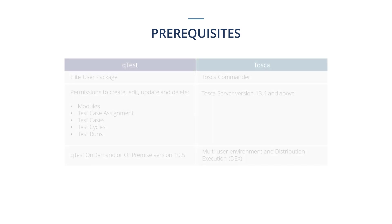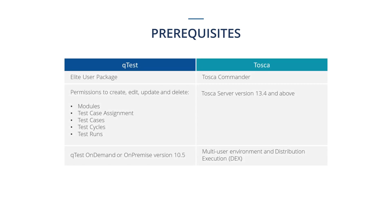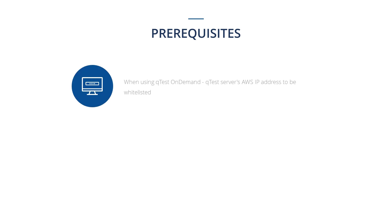To complete this integration, make sure you meet the prerequisites mentioned on screen. Apart from these, there are two important prerequisite points to consider. First, when using QTES on demand, the AWS IP addresses of the QTES server should be whitelisted in your domain.